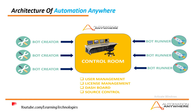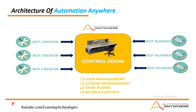Automation Anywhere provides three robotic process automation bots: the first is Bot Creators, the second is Control Room, and the third is Bot Runners. Let me explain each one of these.